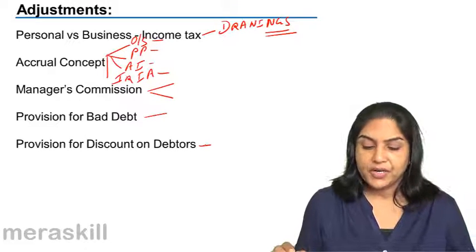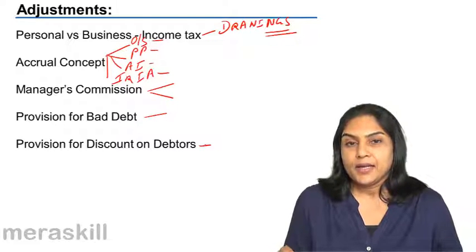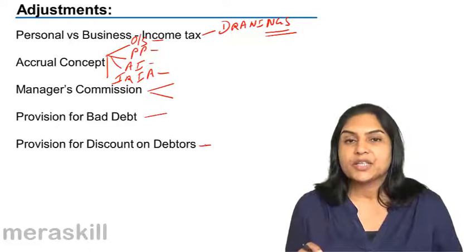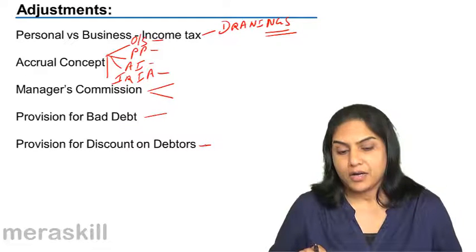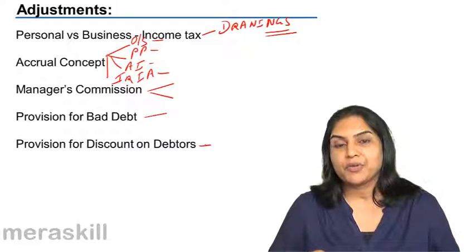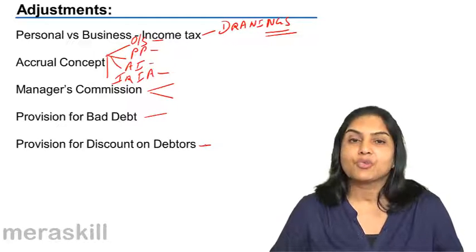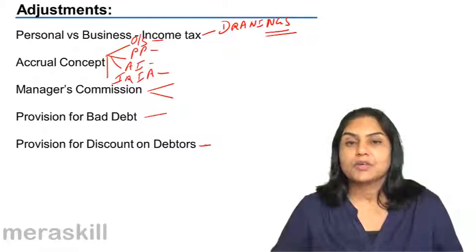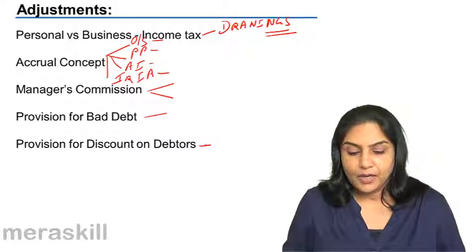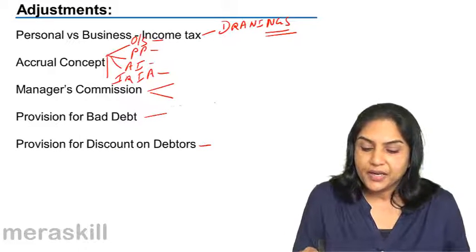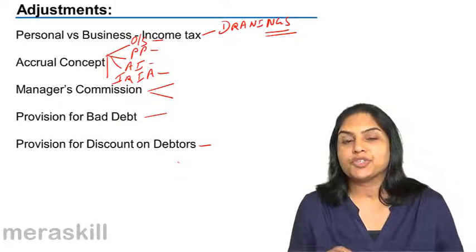Then we have provision for discount on debtors. If it is computed as a percentage, it is taken on debtors less bad debts less provision for doubtful debts. The net balance after providing for doubtful debts percentage is taken on those debtors, because discount would only be offered to customers from whom early payment is expected. We also discussed how these appear in the balance sheet: debtors less bad debts, less provision for doubtful debts, less provision for discount on debtors.